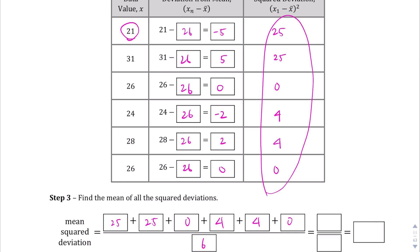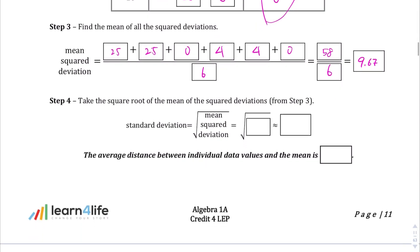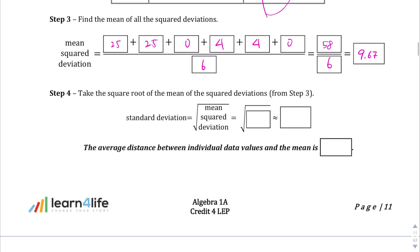And so, let me see. 25 plus 25 is 50. 50 plus, that's going to be 58 divided by 6. And when I punch that into the calculator, 58 divided by 6, I get 9.67. So, that's the approximation there, that 9.67.